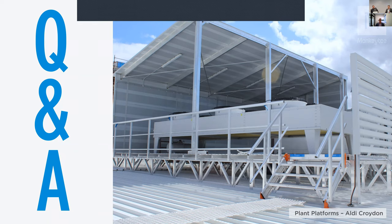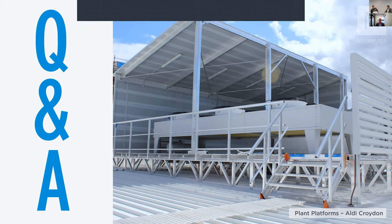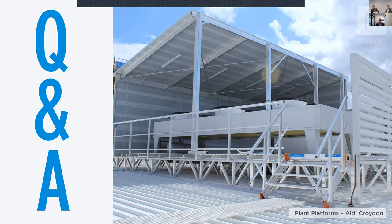Question about the type of aluminium we use: we use marine grade aluminium — a T6 aluminium, so high tensile. The beauty of marine grade aluminium is it doesn't need any coating for its durability. It can be powder coated if needed for the look, but it doesn't require it for its longevity.